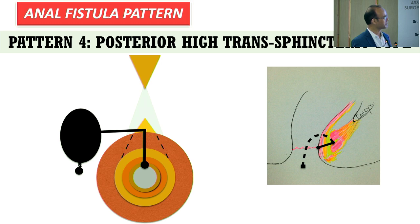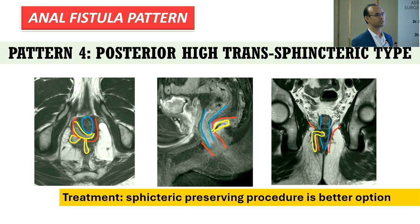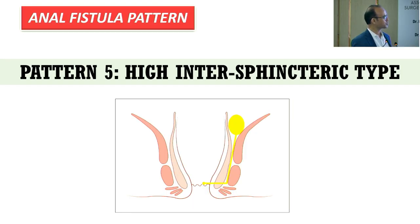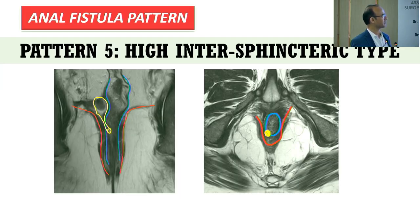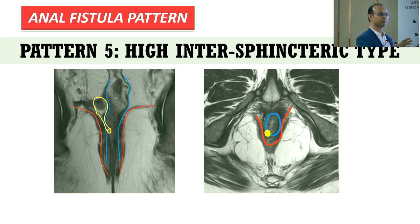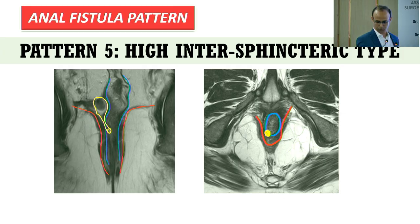Posterior high transsphincteric fistula involves the deep post-anal tunnel space — the posterior track goes to the deep post-anal tunnel and then extends either unilaterally or bilaterally (horseshoe fistula). Sphincter-preserving procedure is required due to high risk of incontinence. High intersphincteric fistula travels upward — potentially supra-levator or even abdominal — but is simple to treat: tackle the glandular area and divide everything (internal sphincter) up to the anorectal junction for better outcome.